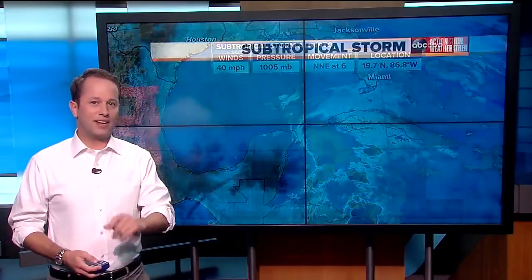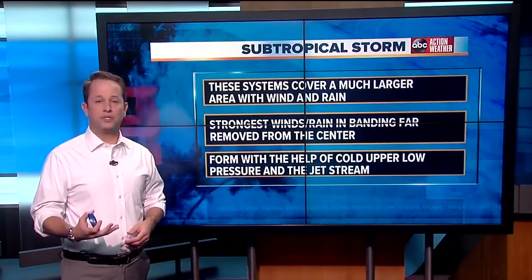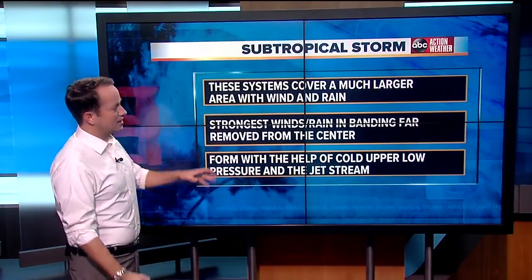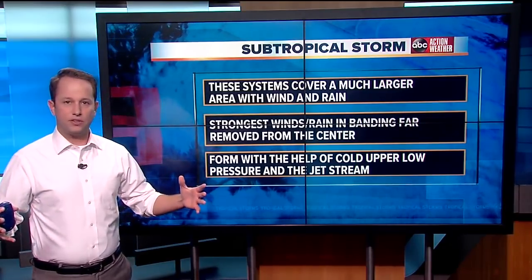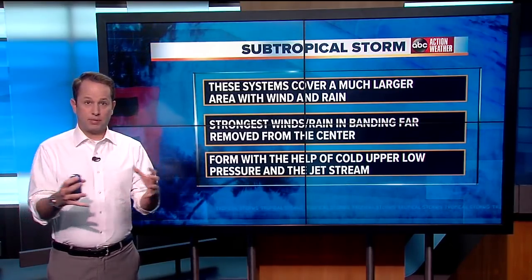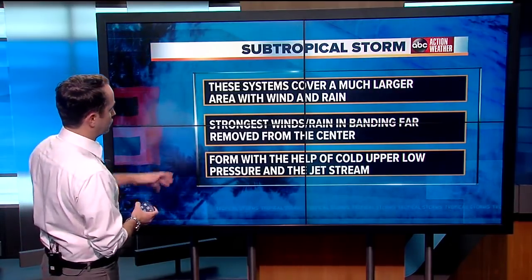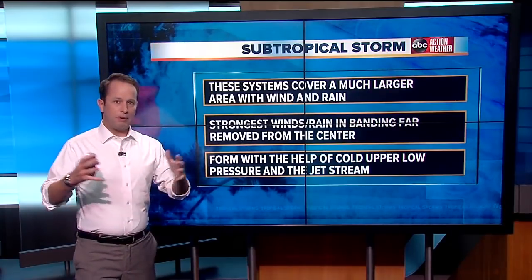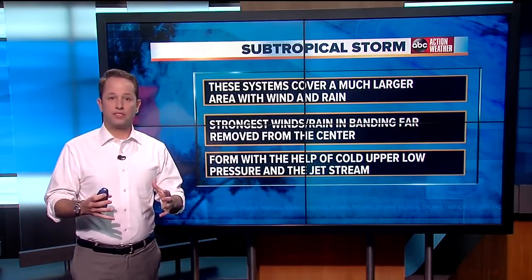Well, it's similar to tropical systems, but it's not the same. So let's define a subtropical storm. A couple of the features that you would see with Alberto and other subtropical storm systems is that these systems can tend to be much larger in their wind and rain fields than what tropical systems are. They typically are a little bit more closed off and closer to the center of the circulation. The strongest winds with subtropical storms tend to be in banding features that typically set up 100 to 150 miles away from the center.